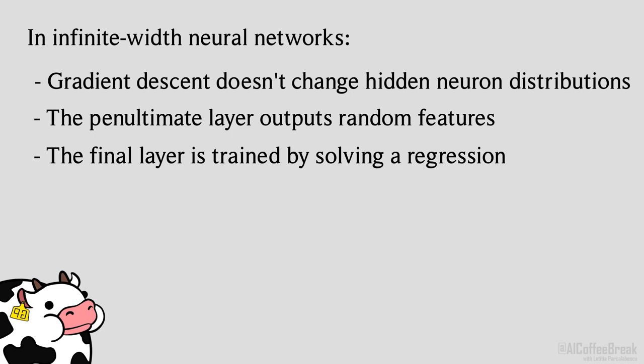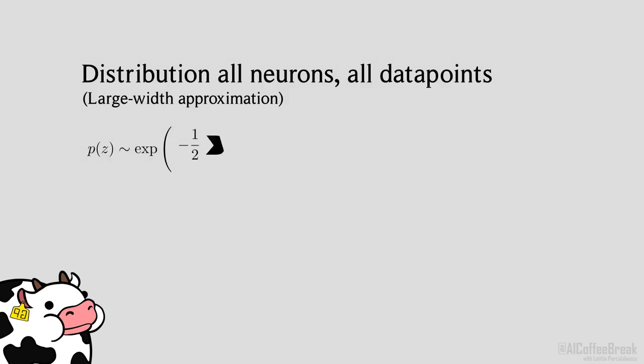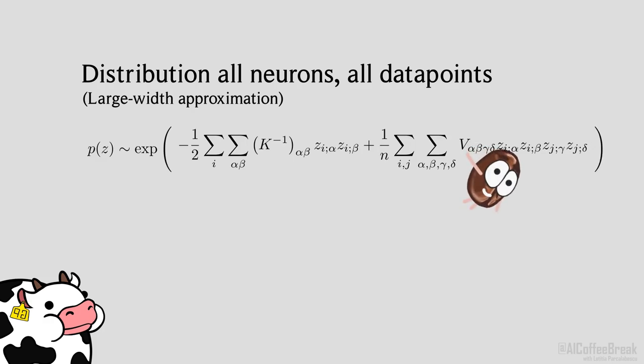This is why infinite-width neural networks are said to be linear. The root cause of these issues is the uncorrelatedness of the neurons. Wiring requires correlations between neurons and representation learning requires correlation between layers. As promised, finite-width networks alleviate this by virtue of the fact that they have higher-order terms, the first of which is V.